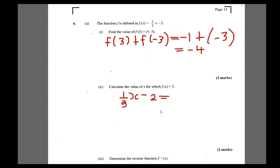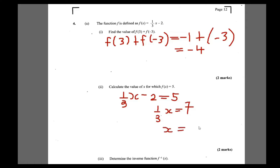Bring over the 2, so you have 1 over (3x) = 7. If one-third of x gives 7, then x must be 21, because one-third of 21 is 7. So x = 21.